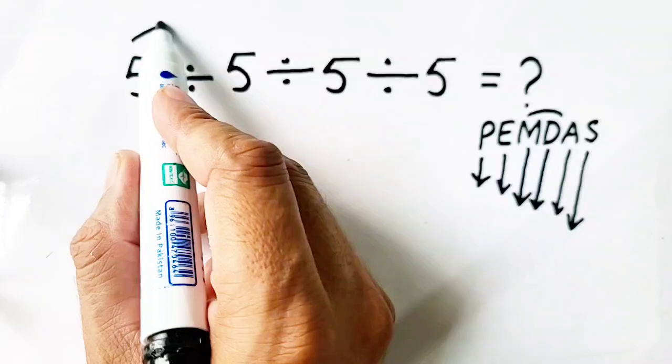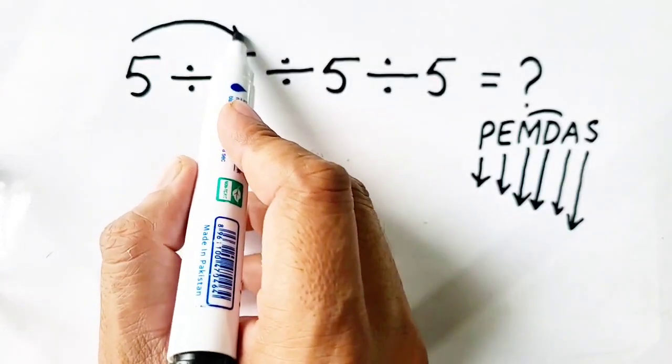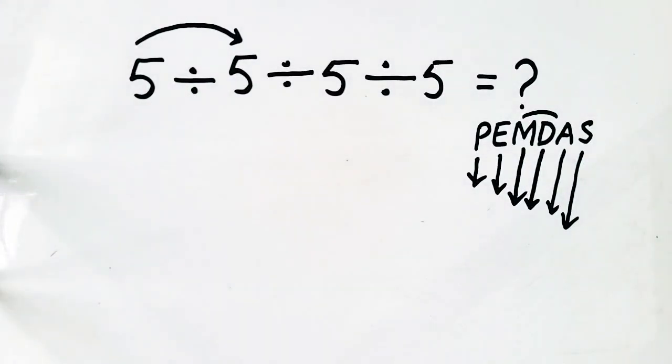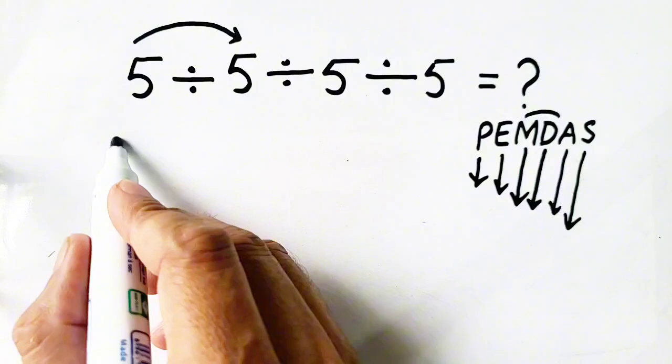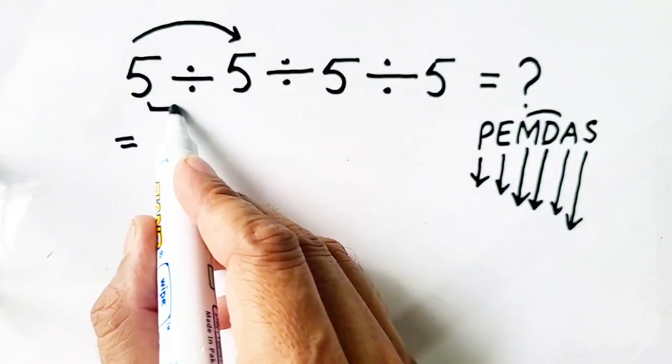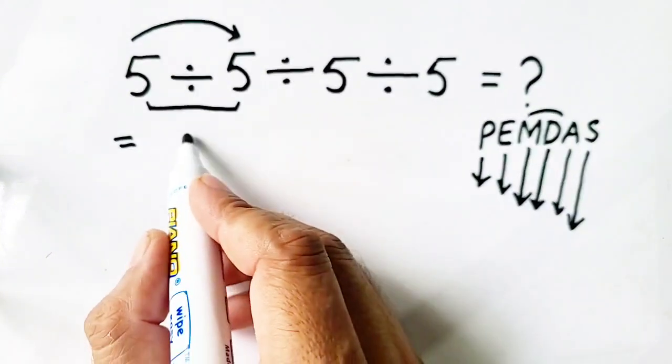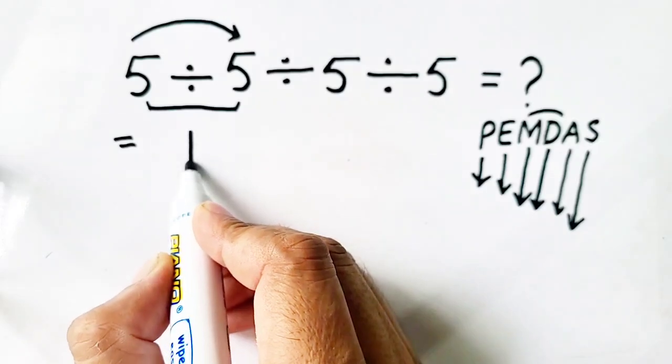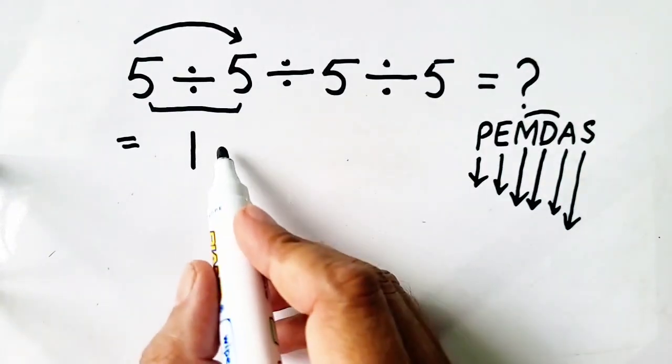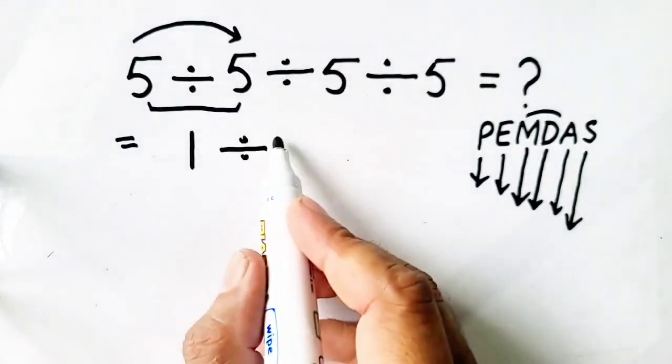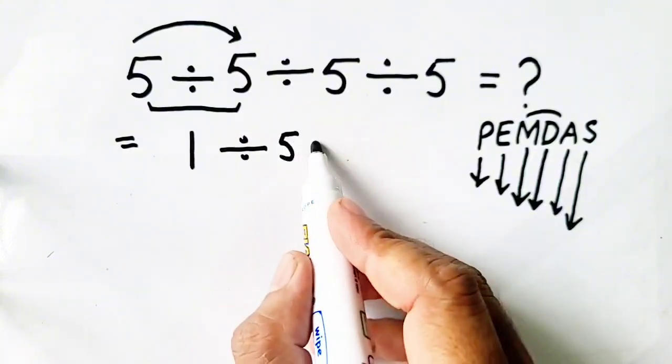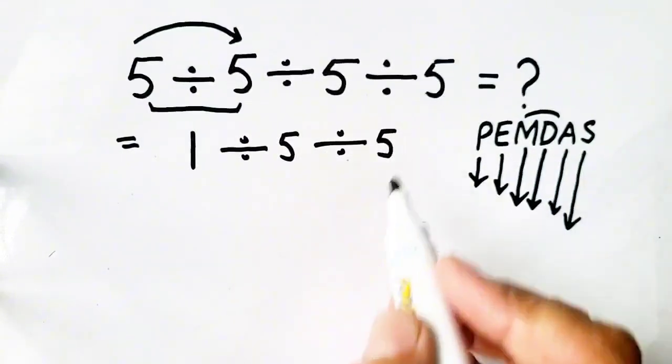So, first of all, we will solve this. So, 5 divided by 5 will be equal to 1. Now, 1 divided by 5 divided by 5.